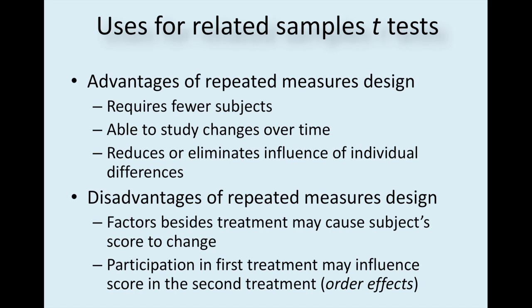Some of the disadvantages are that factors besides the treatment may cause the subject's scores to change. So maybe it wasn't the hour they spent in the tutoring center that helped them get better at their tea testing. Maybe they went home and they watched some helpful videos on YouTube on how to find the critical value of tea. Also, participation in the first treatment may influence scores in the second treatment. We call this order effects. And you know this. If you watch a movie the first time, you kind of get some of the jokes and you get the plot. But you watch it a second time, wow, you get a lot more. You're like, was I even paying attention that first time? So just you being exposed to that treatment effect has an influence or an order effect on your score on the second treatment.